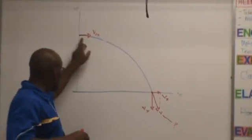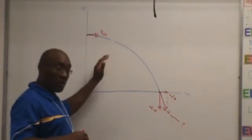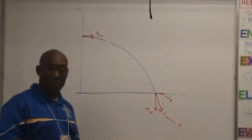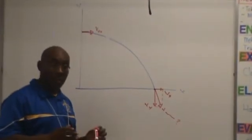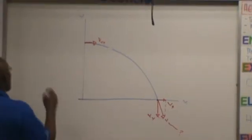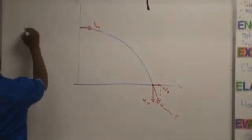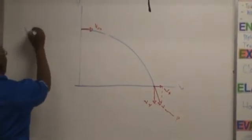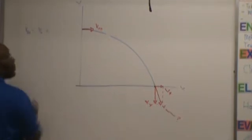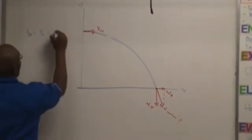The horizontal component is the same, because the velocity in the horizontal direction is constant. Remember that? So V of X equals V0 of X, which is equal to 30 meters per second. We know that already.